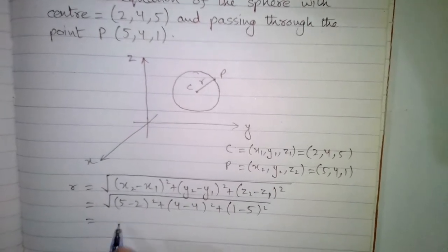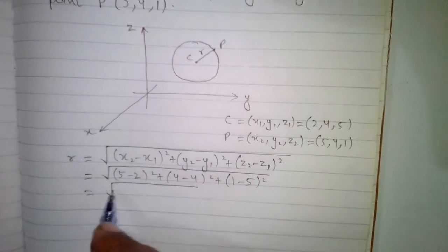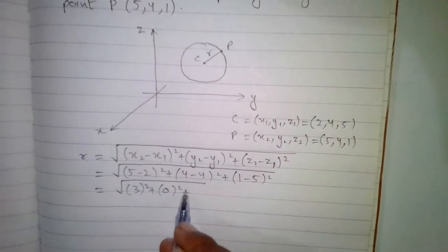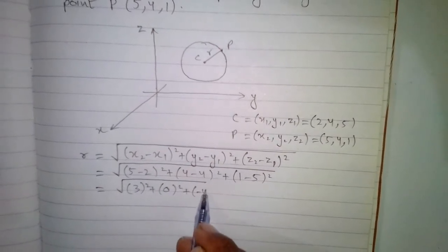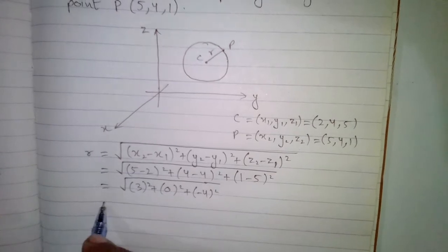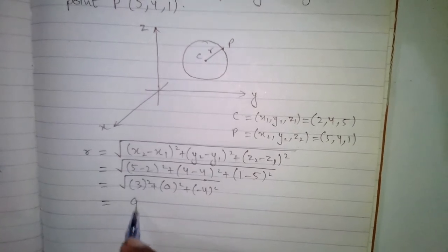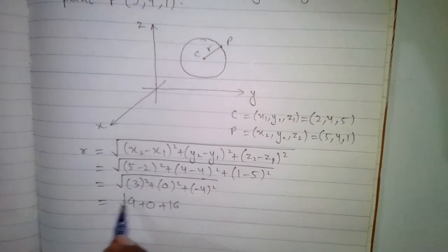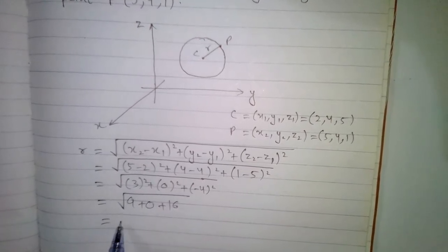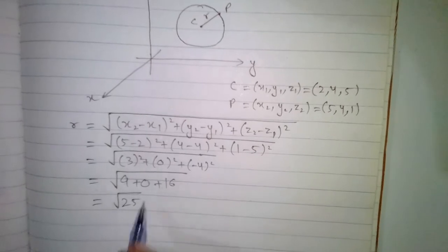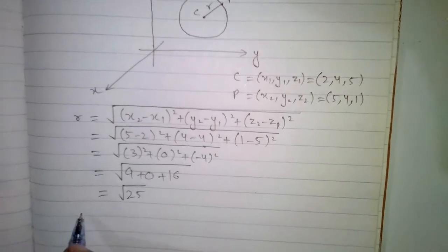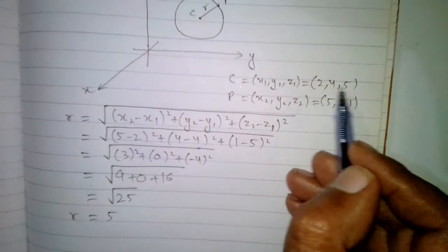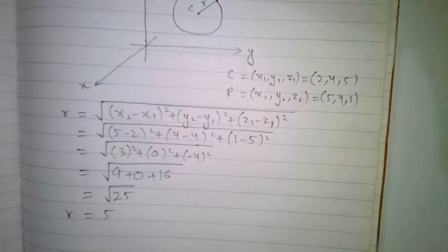This gives us the square root of 3 squared plus 0 squared plus (minus 4) squared. Now 3 squared is 9, 0 squared is 0, and (minus 4) squared is 16, giving us the square root of 25. So the radius of the sphere is 5, and the center of the sphere is (2, 4, 5).